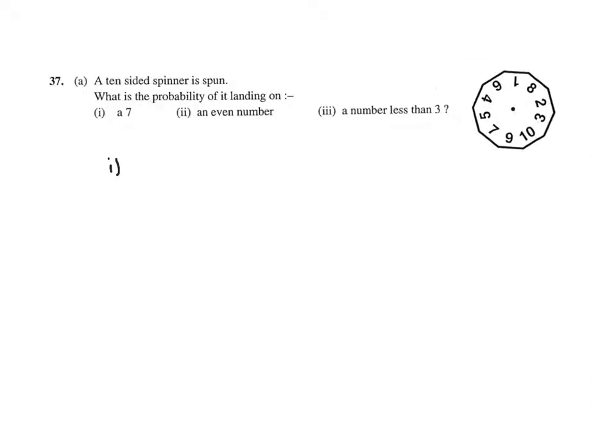Probability. What's the probability of getting a 7? Well, there's only one 7, but there are 10 numbers. So it's 1 out of 10. Probability of getting an even number: well, there are 5 even numbers and 10 in total. So that's 1 out of 2. Probability of getting a number less than 3: well, that's 1 and 2, which is 2 out of a total of 10, which is 1 out of 5.